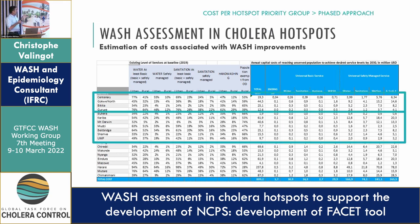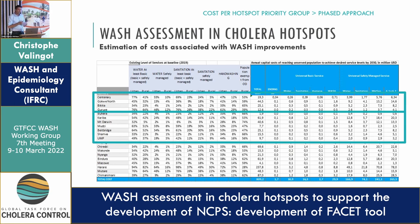The idea is that we can use this to estimate the amount needed for priority group one and priority group two, and based on the amount of funding we may be able to raise, we would be able to start the operationalization process.